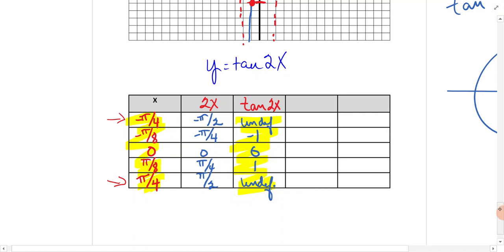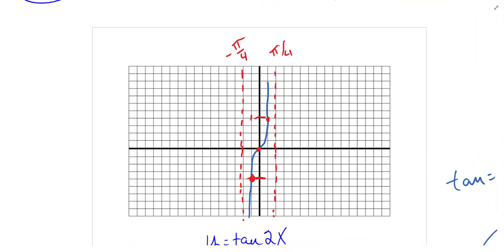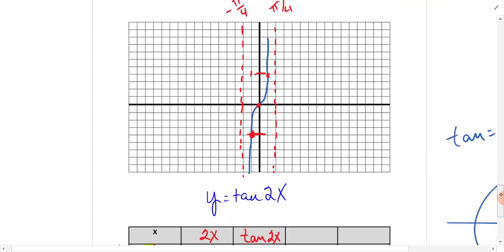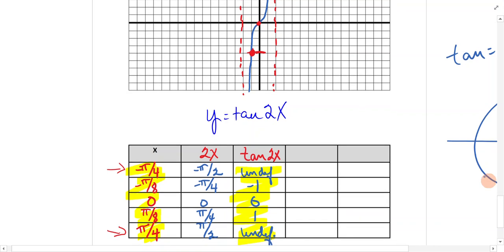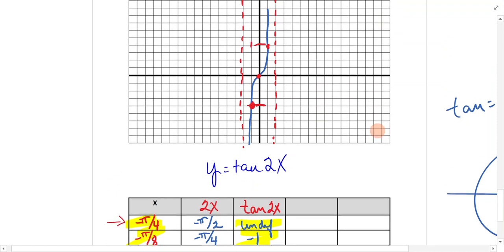You come back up to your grid. At negative pi over 4, you're undefined. At negative pi over 8, we're at negative 1. I just let 4 blocks be 1. So this is 1, this is negative 1.